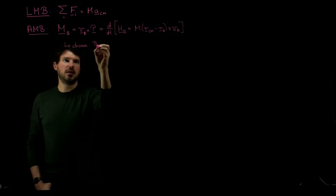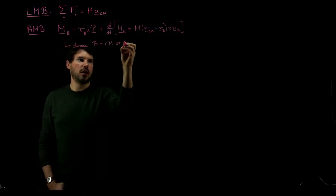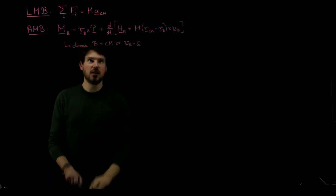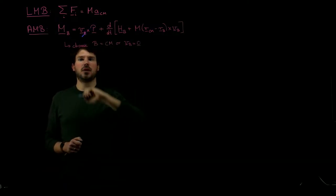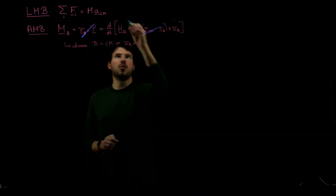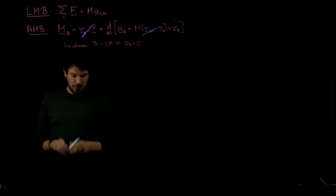What we discussed is we should always choose point B in a wise fashion. For example, B could be the center of mass or a point which is fixed, which has zero velocity. In this case, this term cancels and this term cancels.